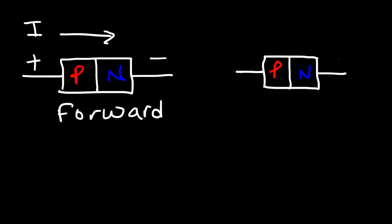Now if we reverse the polarity, the diode will be in reverse bias mode, and so no current will flow unless we apply a very high voltage.